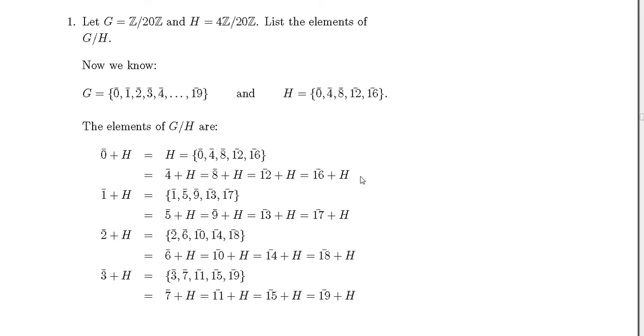They will be equal to 8 plus H, 12 plus H, because these are the same sets. If you add 4 here, you will get the same set because 0 plus 4 is 4, 4 is here, 4 plus 4 is 8, 8 is here, and 16 plus 4 is 0 because we are in 20Z, we are working modulo 20. Then 1 bar plus H is this one, 2 bar plus H is this one, and 3 bar plus H is that one.